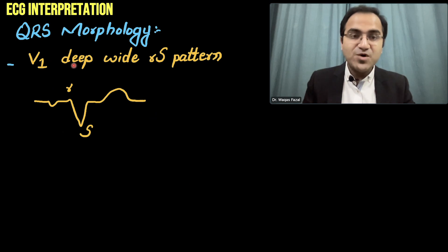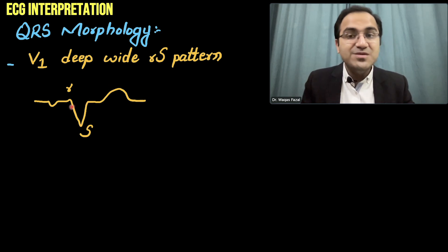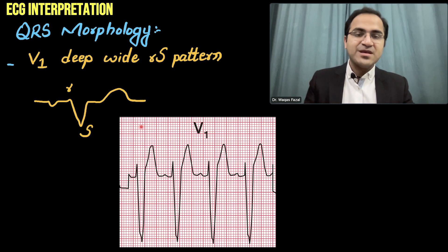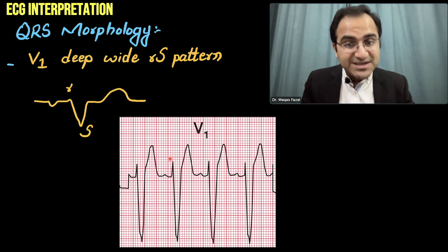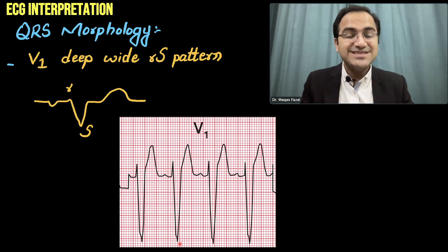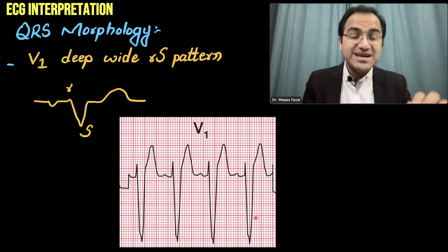Coming to the QRS morphology in lead V1: in V1 you will see a deep wide RS pattern. The S wave will be deep, and there will be slurring of the S wave. The first deflection is the R wave and after that is the S wave. Look at the deep, slurred S wave seen in V1.